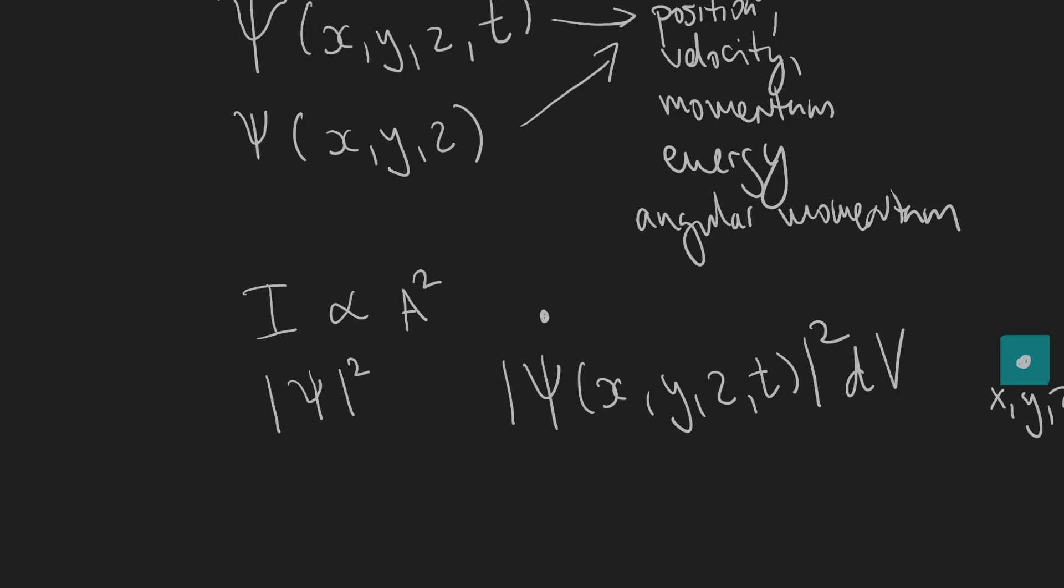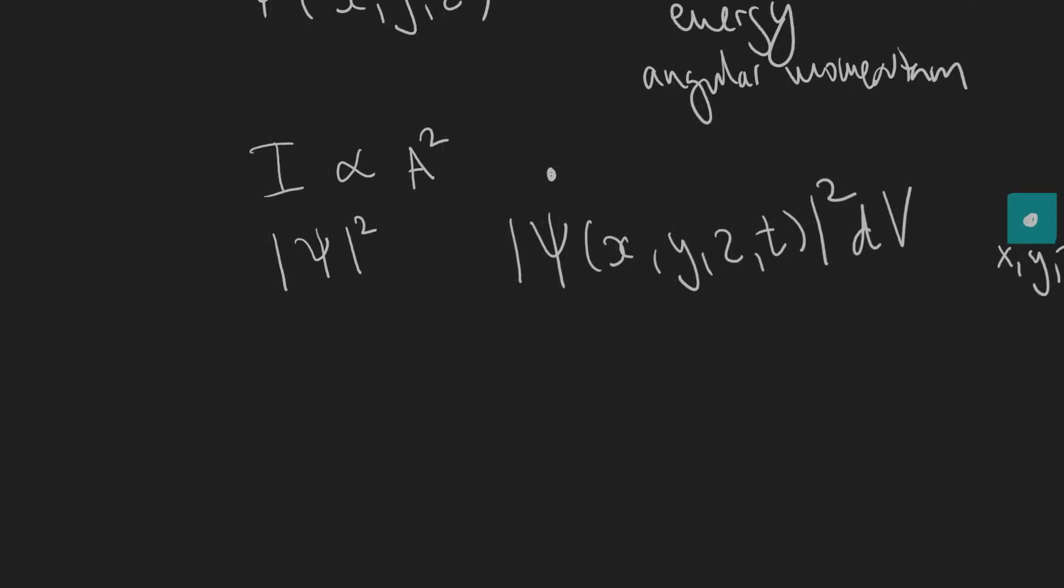This is the first interpretation of quantum mechanics made by the German physicist Max Born but it requires the wave function to be normalized. Now what do I mean by the wave function being normalized?